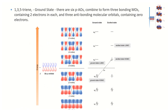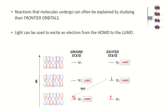For the conjugated 1,3,5-triene, ψ3 is the HOMO in the ground state and ψ4* is the LUMO. If we excite the molecule with light, the excited HOMO becomes ψ4* and the excited LUMO becomes ψ5* — a change in frontier molecular orbitals upon excitation.